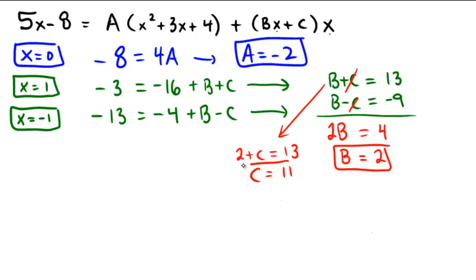So it looks like A equals negative 2, B equals 2, and C equals 11. So if we come back to our original,